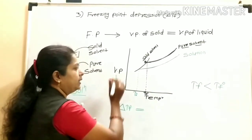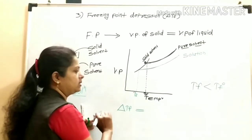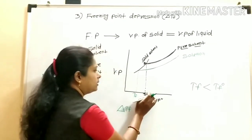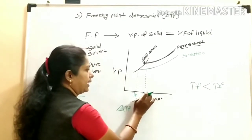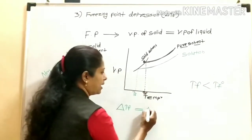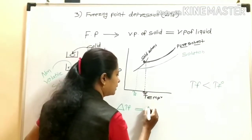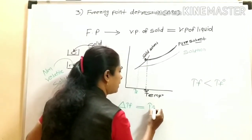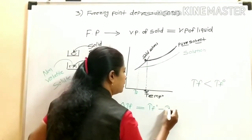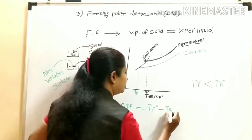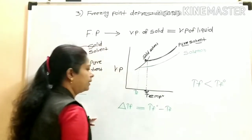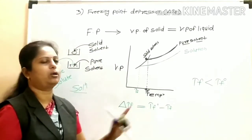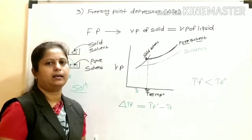Delta Tf, the depression in freezing point, is defined as the difference between the freezing point of the pure solvent and the freezing point of the solution: Delta Tf is equal to Tf naught minus Tf.